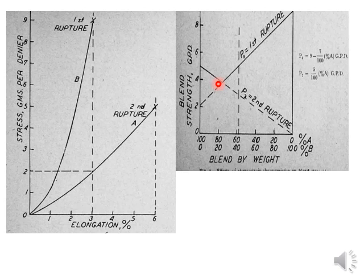In this second example, at the first rupture point fiber A is giving 2 and fiber B is giving 9, while at the second rupture point only fiber A is contributing. The graph shows that up to around the 80-20 blend ratio — that is, up to 20% fiber B — there is no increase in tenacity; instead there is a further decrease in the strength of the yarn. So it is a misconception that adding a stronger fiber will always improve the tenacity of the yarn. The calculation shows that up to this blend ratio the tenacity of the yarn is decreasing.